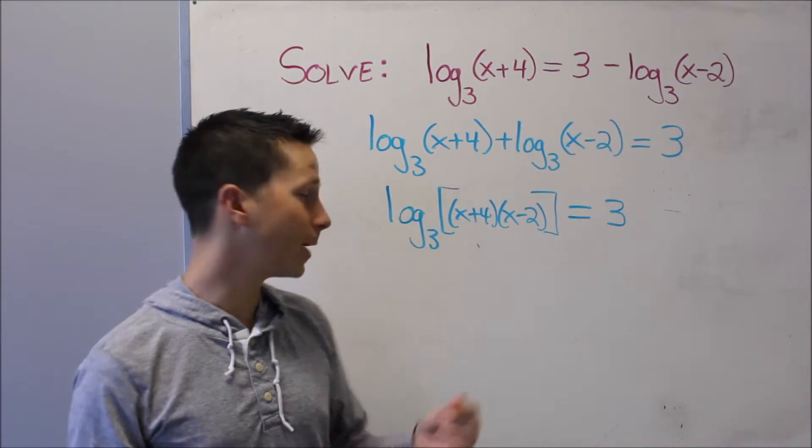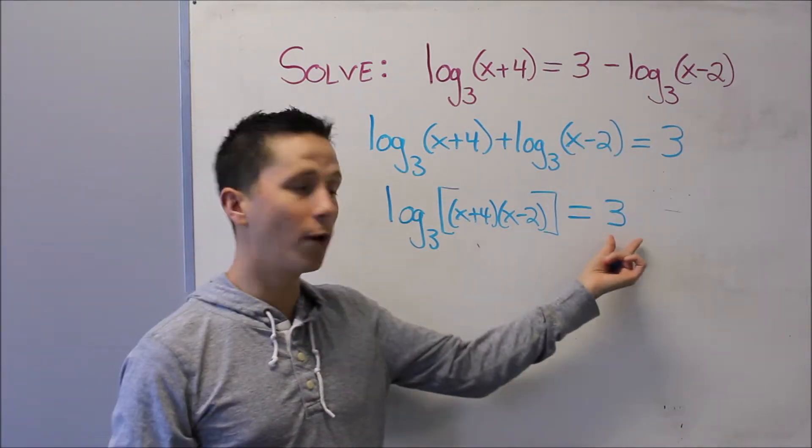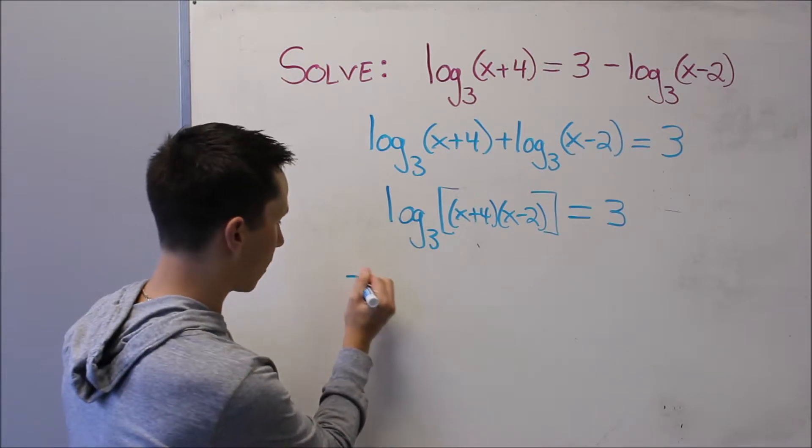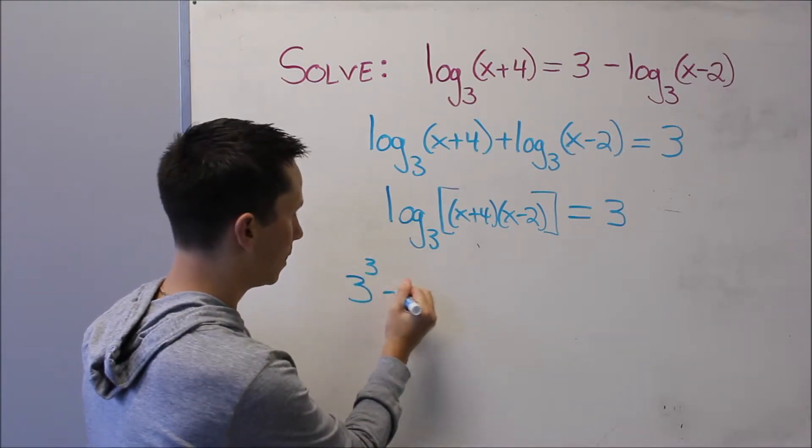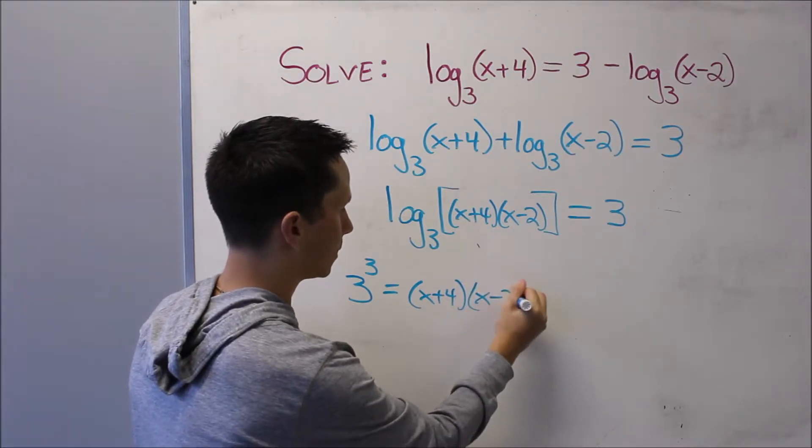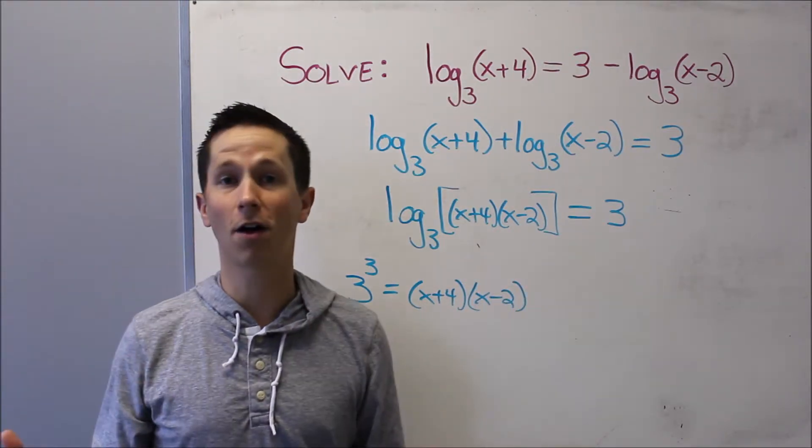So to change the form to exponential, I'm going to take the base raised to this exponent equaling what's inside. So I get 3 raised to the 3 equals (x+4)(x-2). And now all of a sudden the logarithm is gone.